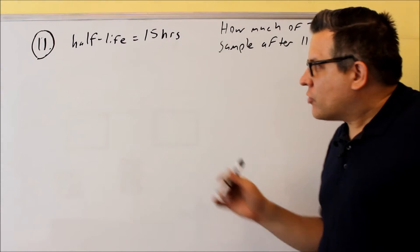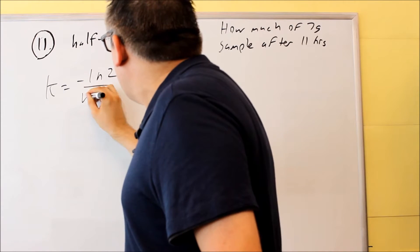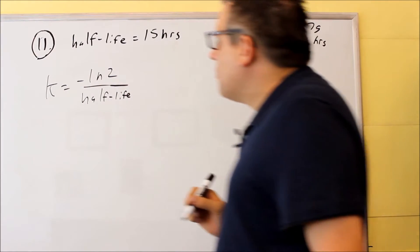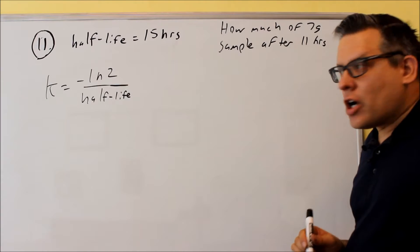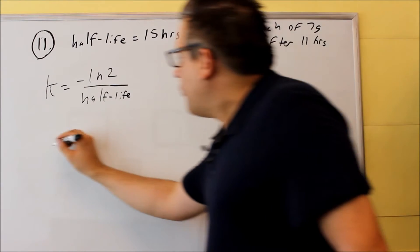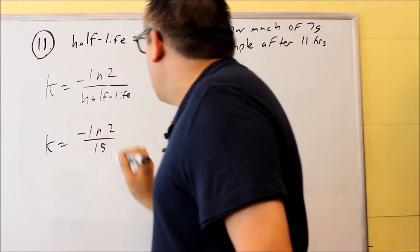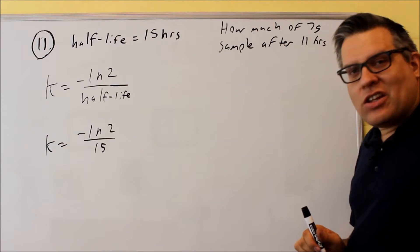For half-life problems, there's a special formula you want to know. To get the k-value that we use in our growth formula, the formula is negative natural log of 2 over the half-life. So the first thing we're going to do is put in 15, so we have negative natural log of 2 over 15 for the half-life.